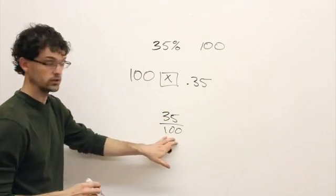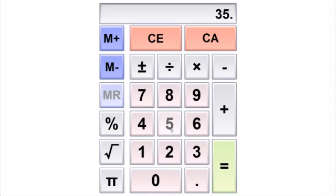If you put that in your calculator—35 divided by 100—you'll get 0.35.